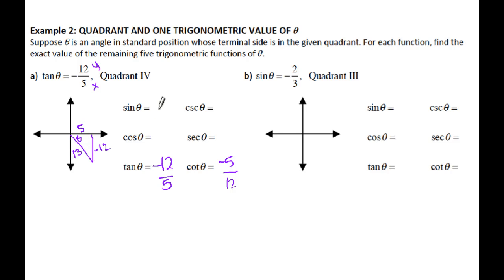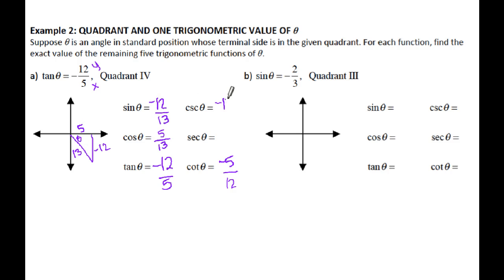Sine is y over r: negative 12 over 13. Cosine is x over r: 5 over 13. Cosecant and secant are just reciprocals: negative 13 over 12, and 13 over 5.